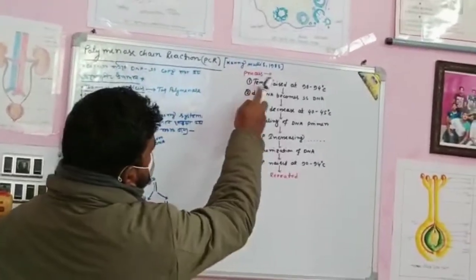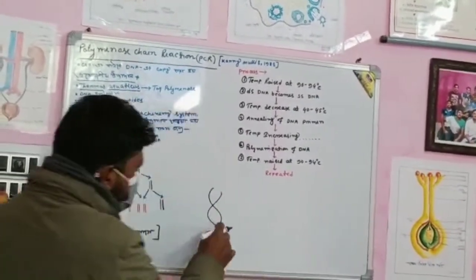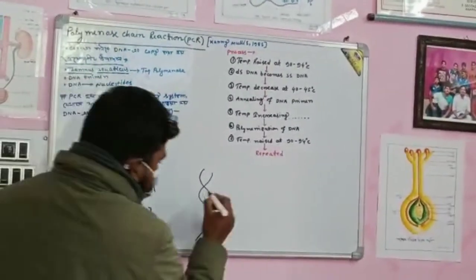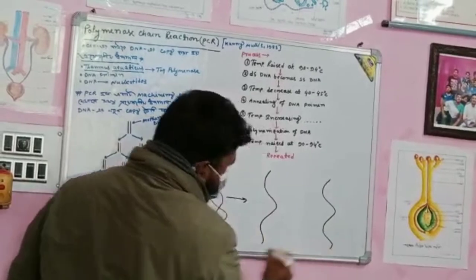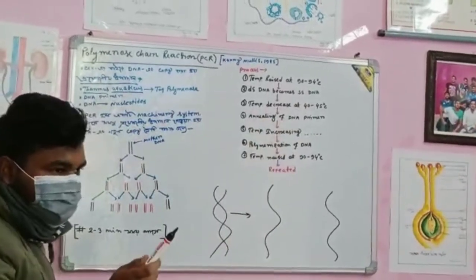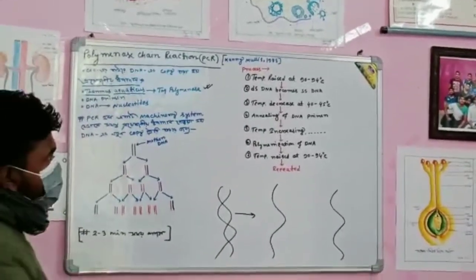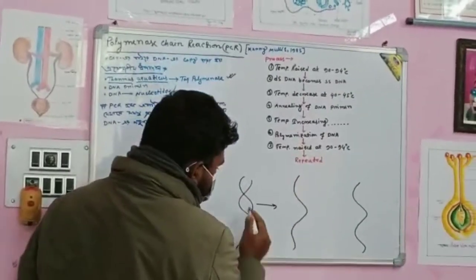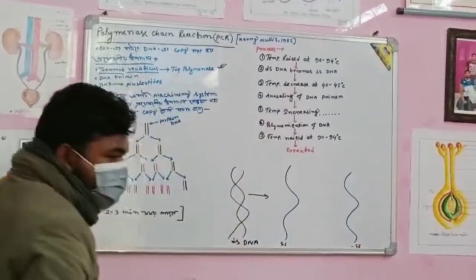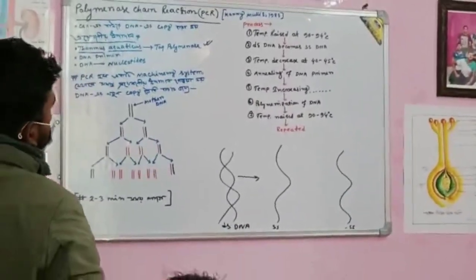The temperature is raised at 90 to 94 degrees. Double-stranded DNA, because single-stranded DNA — double-stranded DNA, dsDNA, becomes ssDNA. Next, temperature decreased at 40 to 45 degrees for DNA primer annealing.